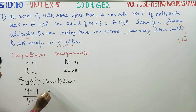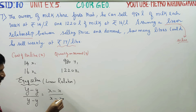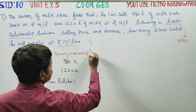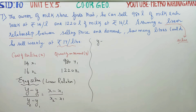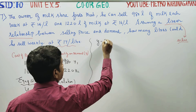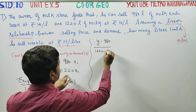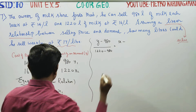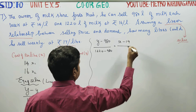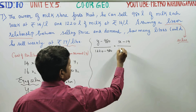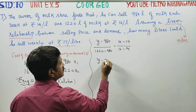Using the two-point form: (y - y1) / (y2 - y1) = (x - x1) / (x2 - x1). Substituting: y1 = 980, y2 = 1220, x1 = 14, x2 = 16. So (y - 980) / (1220 - 980) = (x - 14) / (16 - 14).